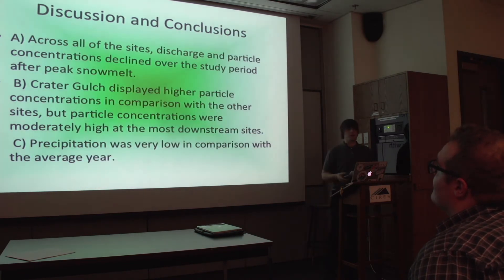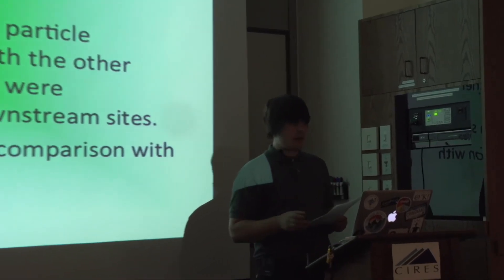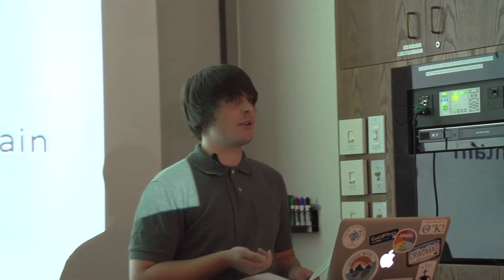In conclusion, across all sites, discharge and particle concentrations declined over the study period after peak snowmelt. Crater Gulch displayed higher particle concentrations in comparison with some other sites, but particle concentrations at the most downstream sites were still moderately high, most likely due to their proximity to human activity with higher industrial, agricultural, and domestic inputs of phosphorus waste. In addition, precipitation was very low compared to the average year. With a higher frequency of localized precipitation events over the Crater Gulch watershed, we probably would have seen higher resulting discharge and particle concentrations. Crater Gulch accounted for less than 10% of the particles reaching Shadow Mountain Reservoir over the study period.